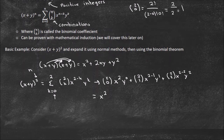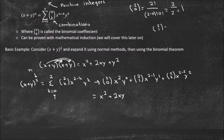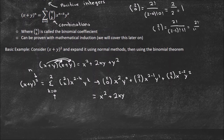Next, 2-choose-1 times x to the (2 minus 1) times y to the first. Anything to the power of zero is 1. For 2-choose-1: since the two values are one apart, it equals 2 — formally, 2! divided by (1! times 1!) equals 2. So we get + 2xy. Then 2-choose-2: whenever n-choose-n, it always equals 1.